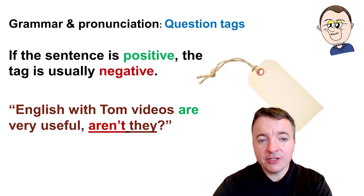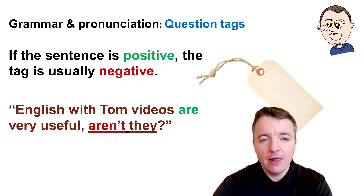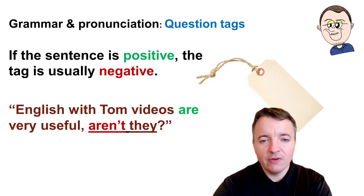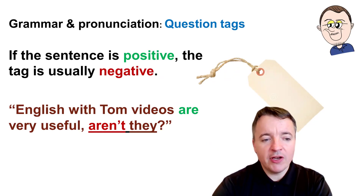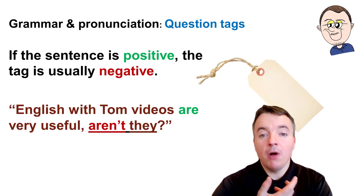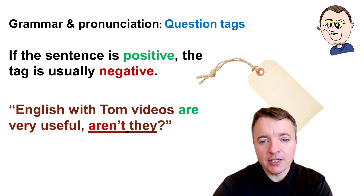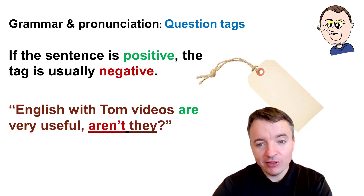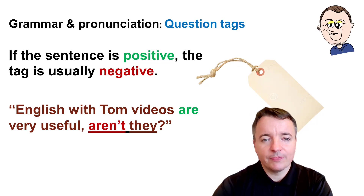If the sentence is positive, the tag is usually negative. For example: English with Tom videos are very useful. 'Are' is positive. Aren't they? 'Aren't' is negative.